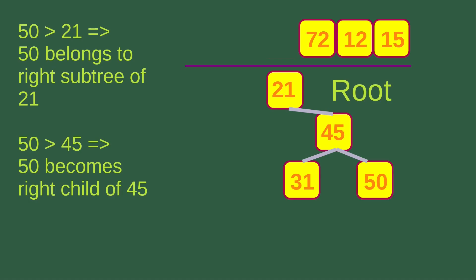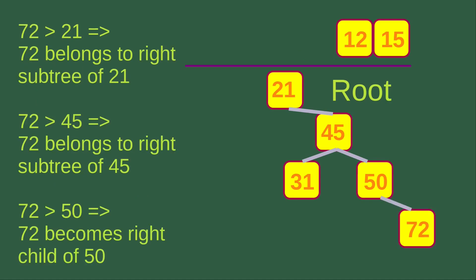The next value is 50. Since 50 is larger than 21 and also larger than 45, 50 becomes the right child of 45. The next element is 72. Since 72 is larger than 21, it belongs to the right subtree of 21. Also, 72 is larger than 45, so it belongs to the right subtree of 45. And since 72 is larger than 50, 72 becomes the right child of 50, placed at the lower right-hand corner of the binary search tree.